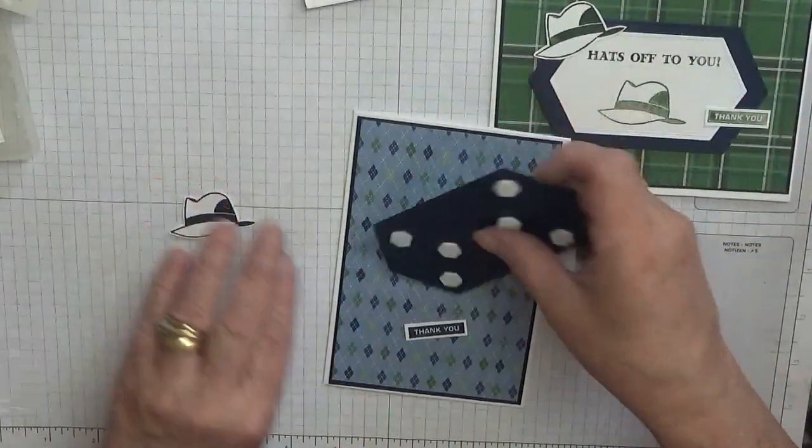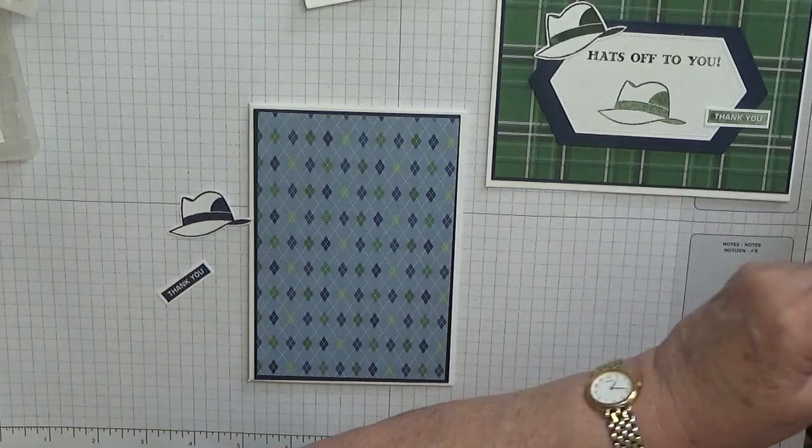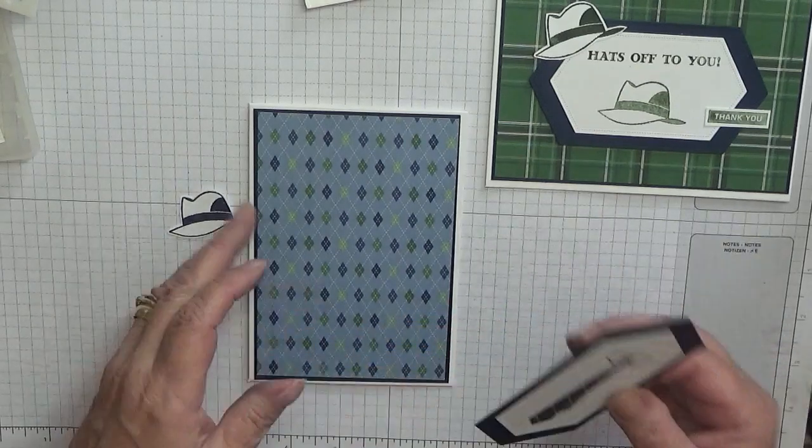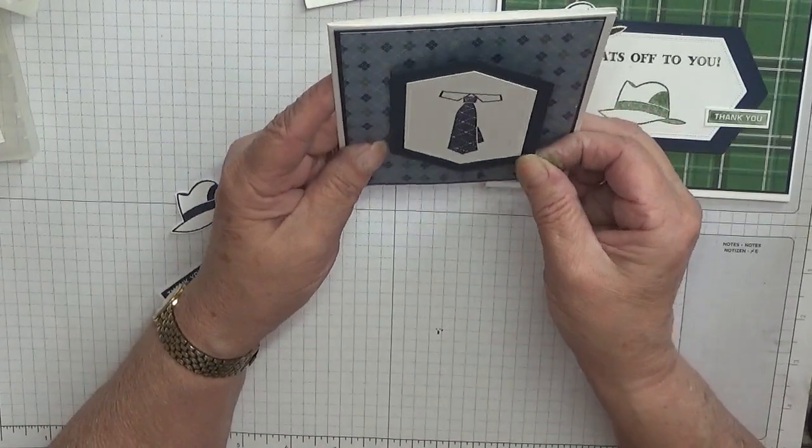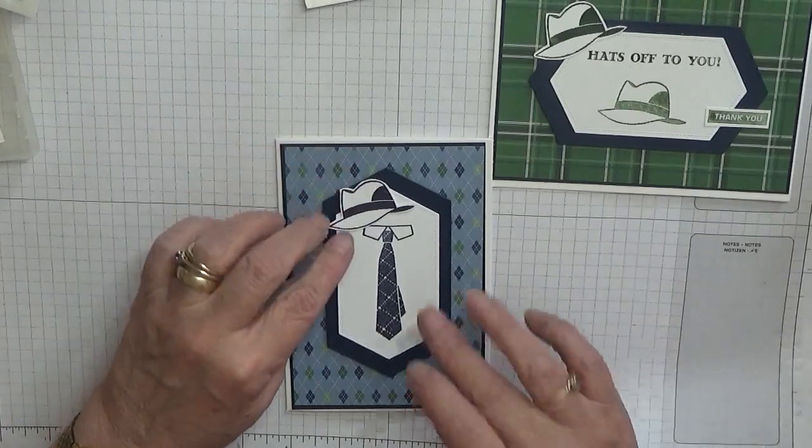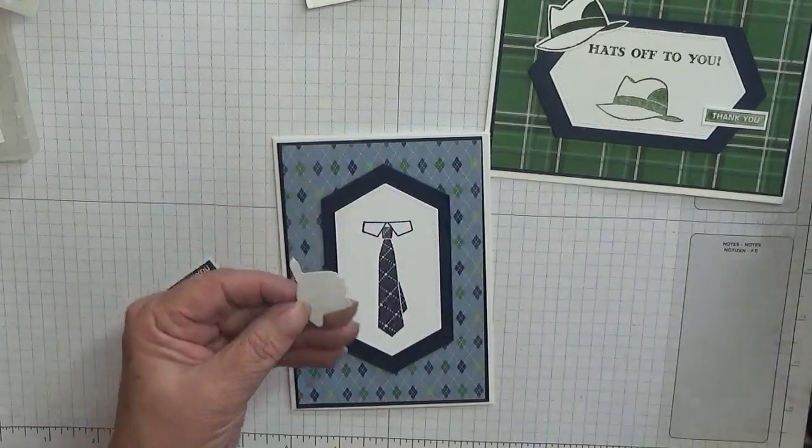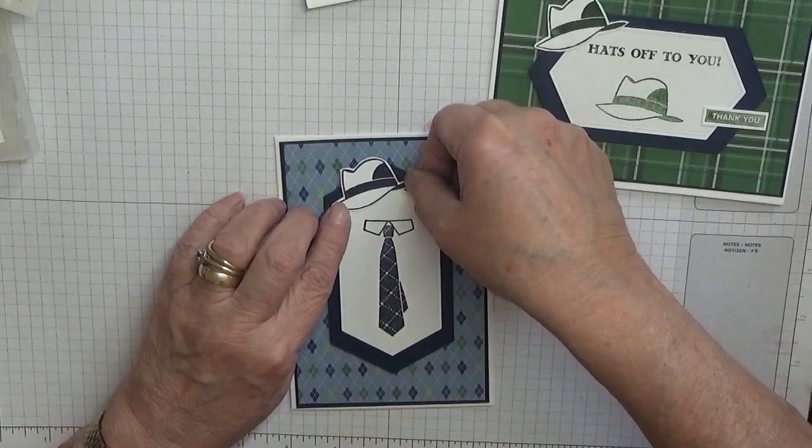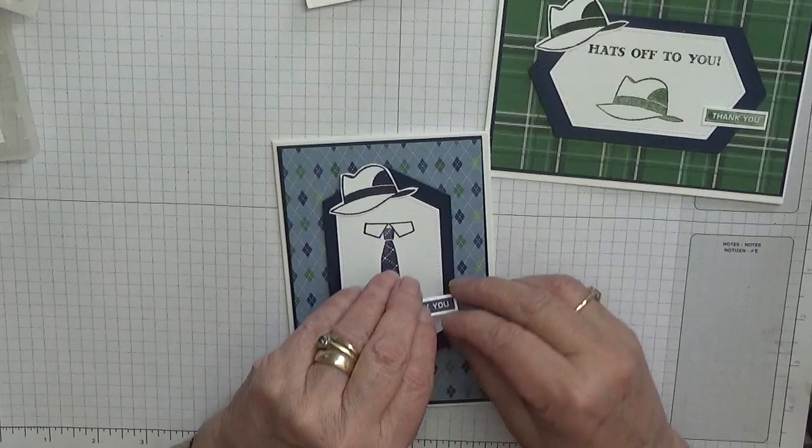Let's get this one done. We'll take the backs off of these, place that on there. This hat sits up there. We don't need dimensionals on that, we'll just glue most of that on.